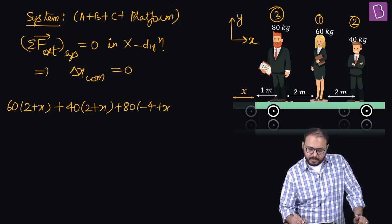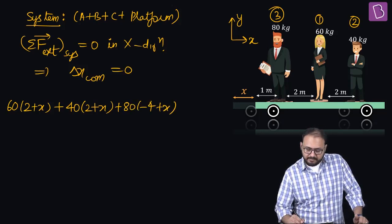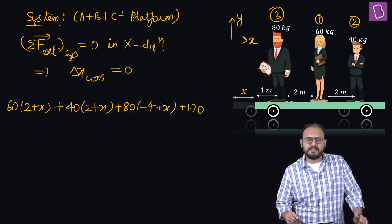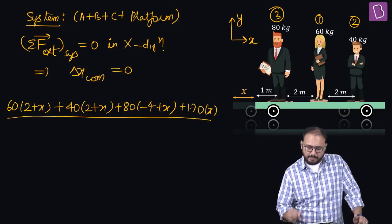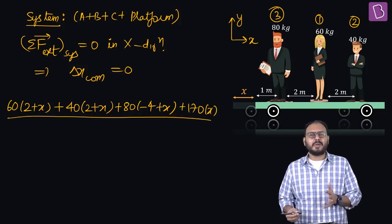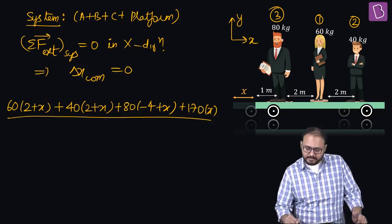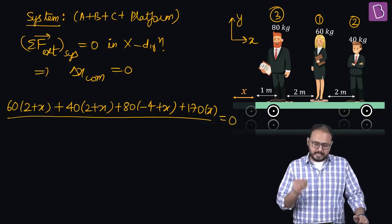80 times minus 4 plus x. Then comes the platform - 170 and the displacement is x. Do you agree I don't need to write the denominator? Let's respect this guy.